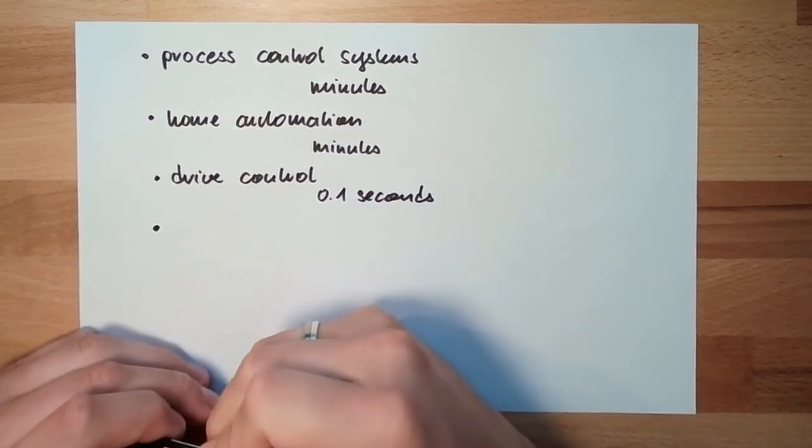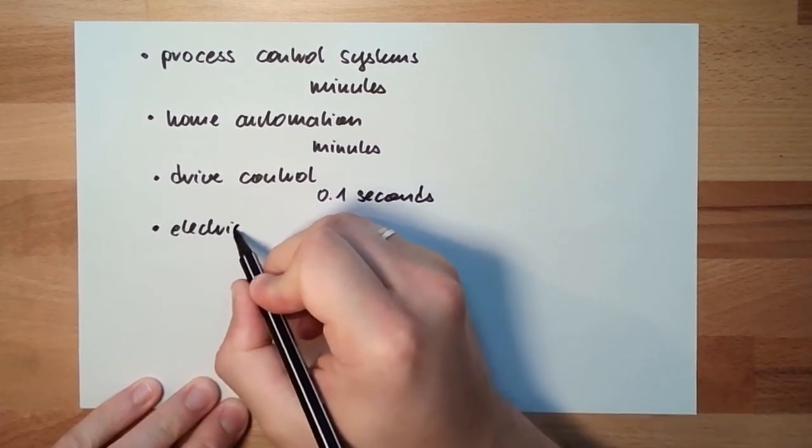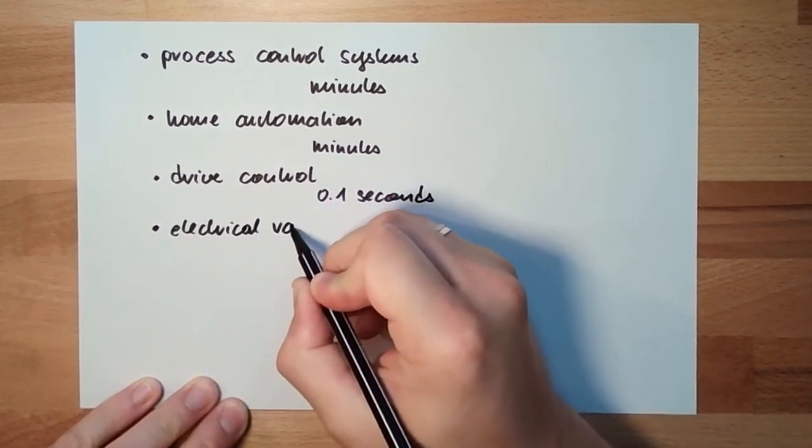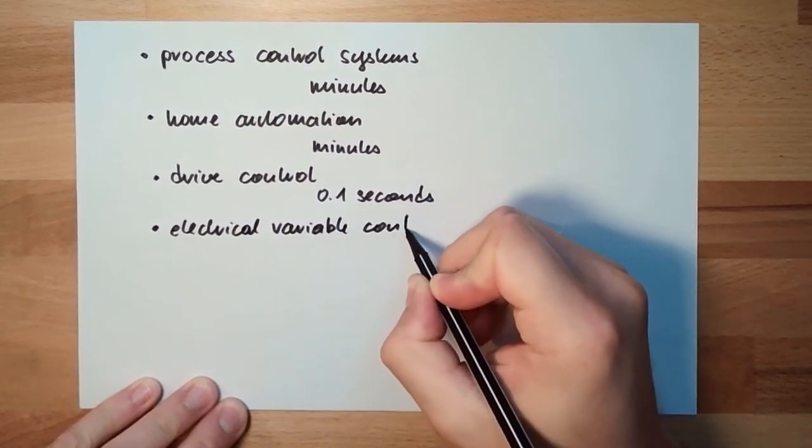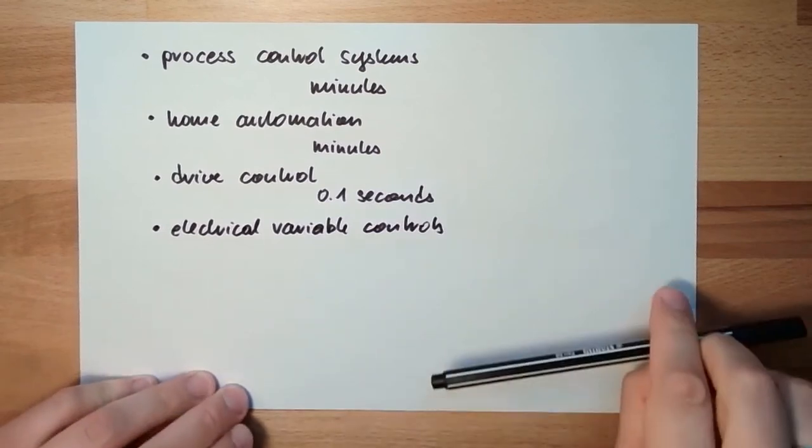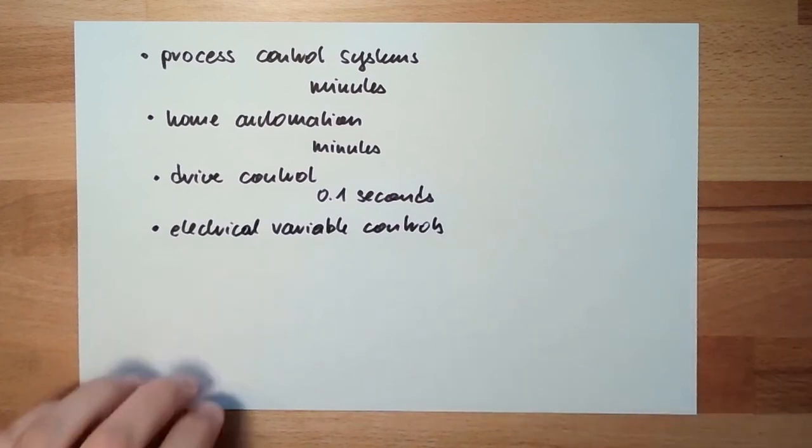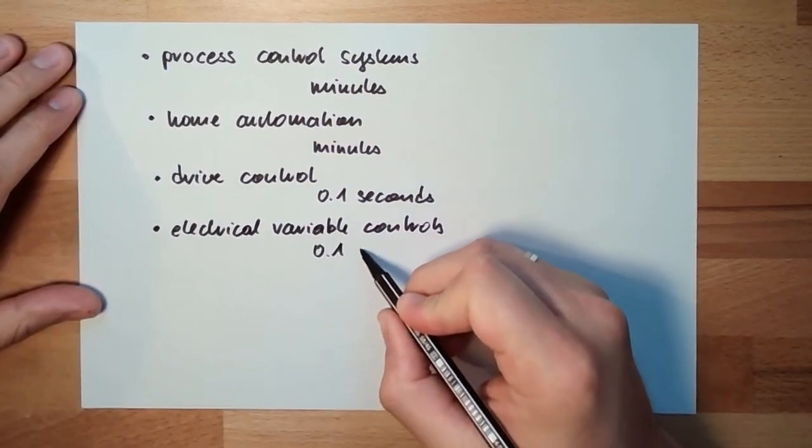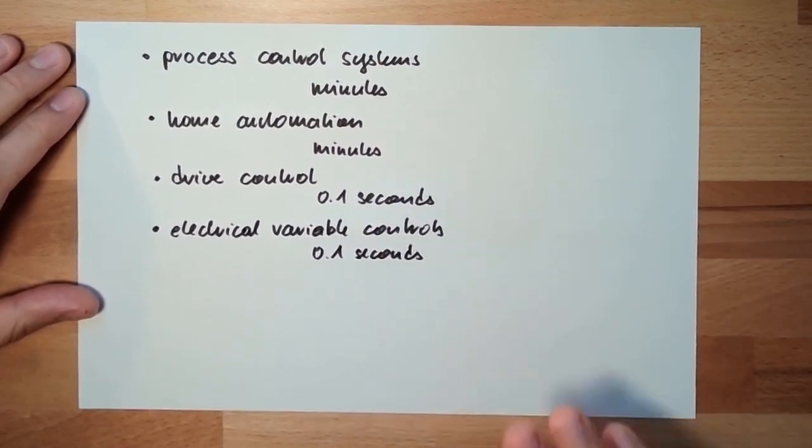Another field of application is electrical variable controls. So we want to control a voltage, we want to control a current, we want to control power, the frequency, also here, we are very, we have to be very fast, 0.1 seconds, very fast, electrical variable controls.